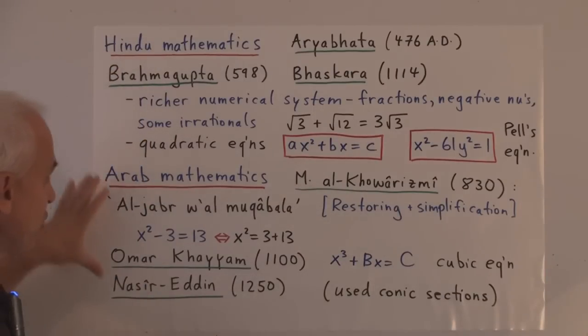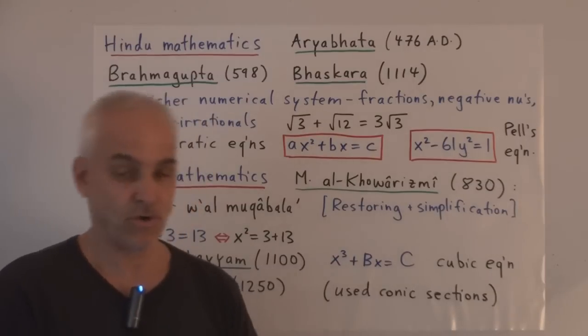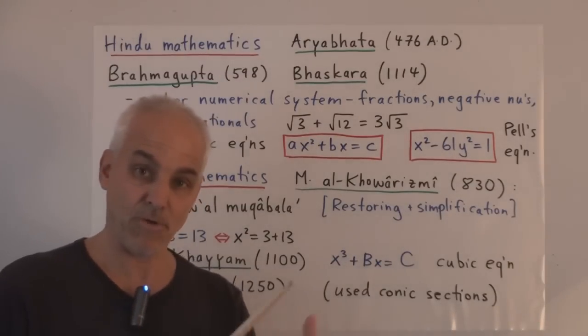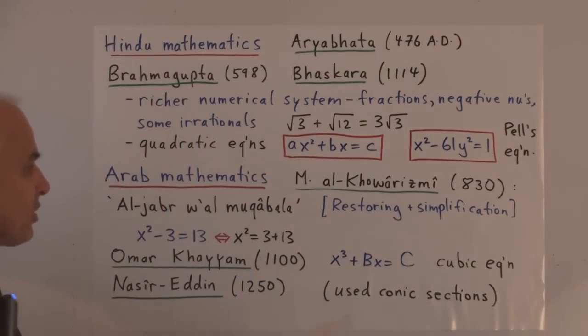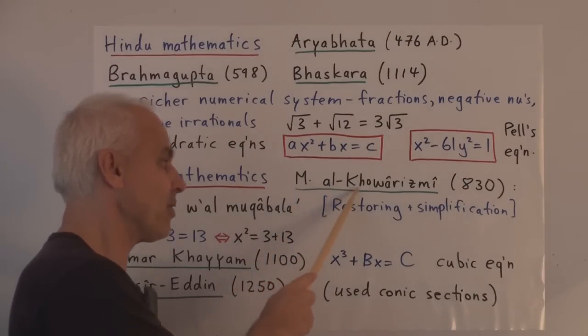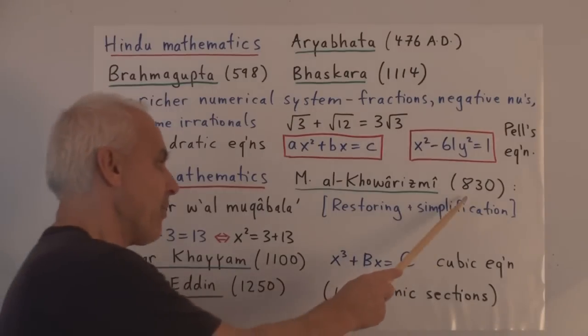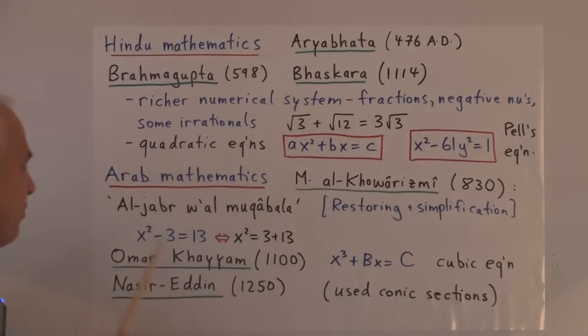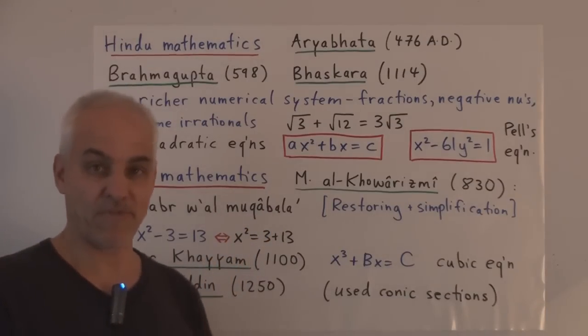After the Hindus, the torch passed to the Arab mathematicians, who took the Hindu works, who took the Greek works, who studied them both, put them together, developed them further. So, the name of algebra, in fact, comes from the work of Muhammad al-Khwarizmi, not sure if I'm pronouncing that right, around 830, who wrote a book called, in Arabic, Al-Jabr Wal Muqabala, which roughly means restoring and simplification.